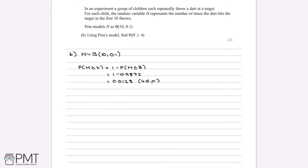There's one more alternative method if your calculator can't do this: using binomial distribution tables found in formula booklets. Looking up n = 10, p = 0.1, x = 3 in the table gives 0.9872. Then compute 1 minus that to get our answer. Therefore, P(H ≥ 4) = 0.0128 to four decimal places. The one mark available is awarded for finding this probability of 0.0128.